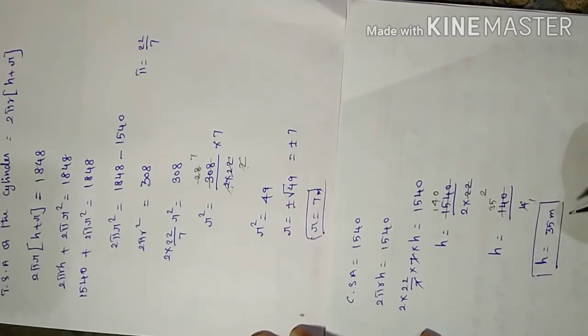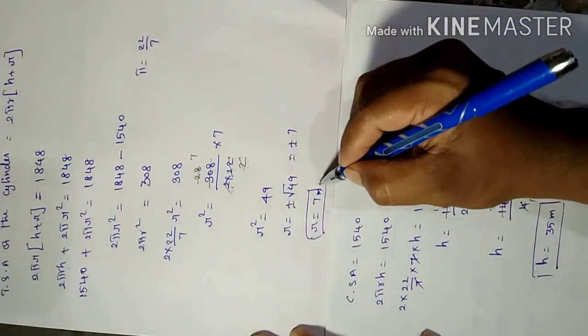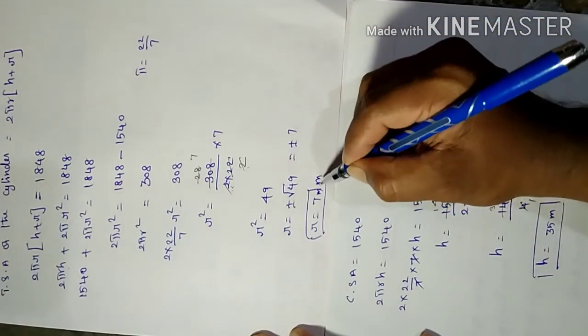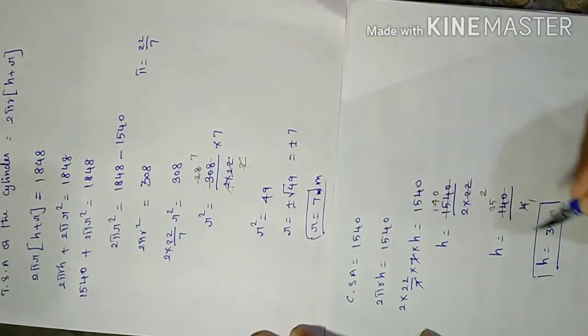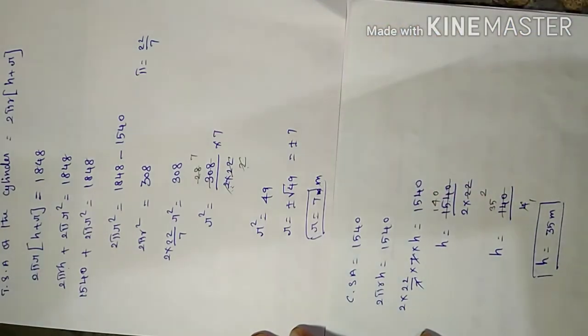The answer to the question: radius value equals 7 meters, and height value equals 35 meters. Hence proved.